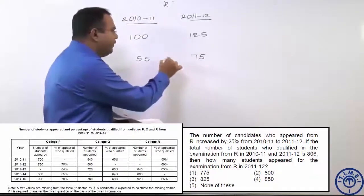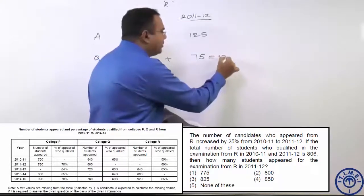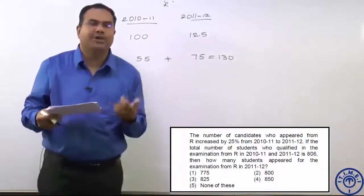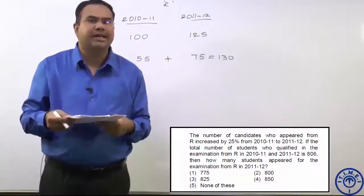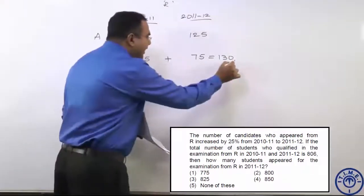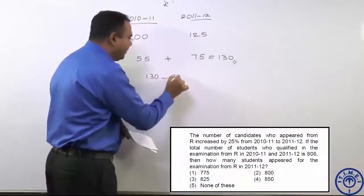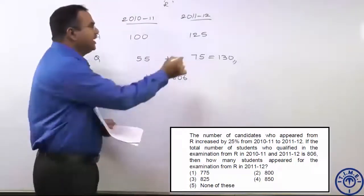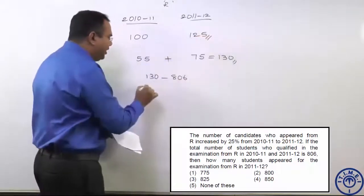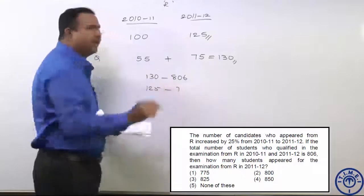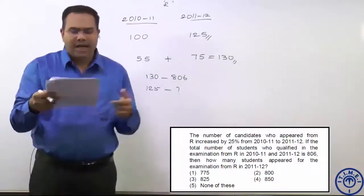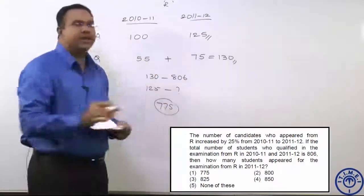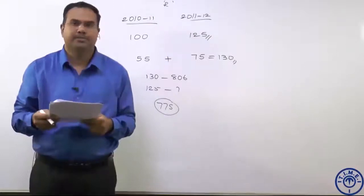What is the total number of students qualified? 55 plus 75 — total number of students qualified is 130. According to the question, what is the actual number of students qualified? 806. So this 130 corresponds to 806. The question asks: find the number of students appeared in 2011-12. The value we have for 2011-12 is 125. By cross multiplication and simplification, we get 775, and it is present in your first option.